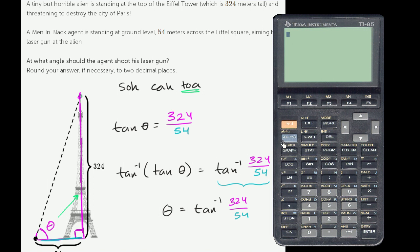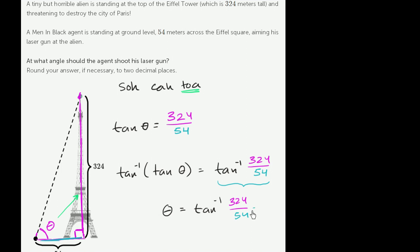Now let me exit out of here, and let me just type in the inverse tangent, so it's in this yellow color right here, inverse tangent of 324 divided by 54 is going to be 80.54 degrees. That's the angle at which you should shoot the gun to help defeat this horrible alien.